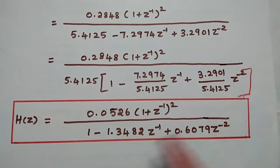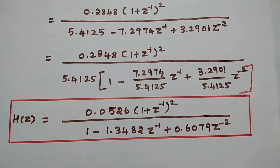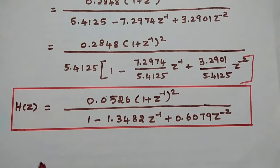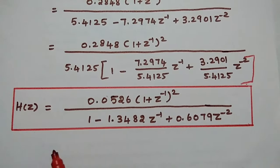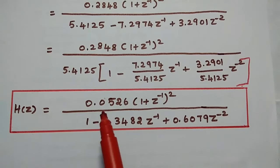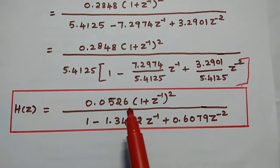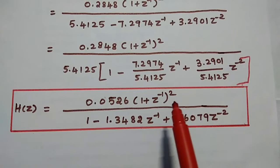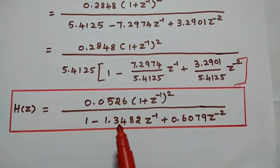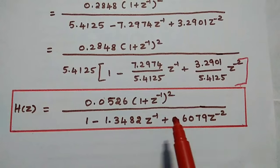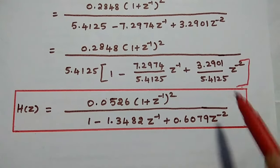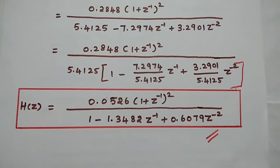The final transfer function of the digital Chebyshev filter using the bilinear method is H(Z) = 0.0526·(1 + Z⁻¹)² / (1 − 1.3482Z⁻¹ + 0.6079Z⁻²). This is the answer.